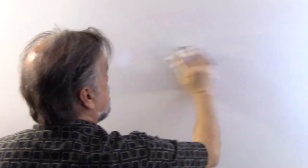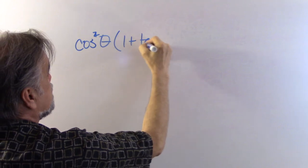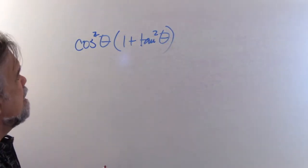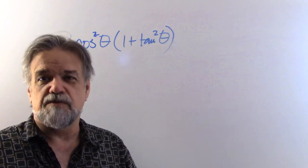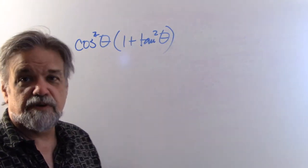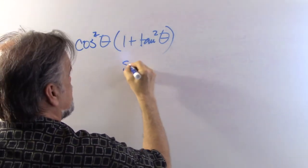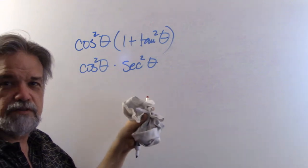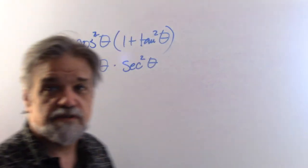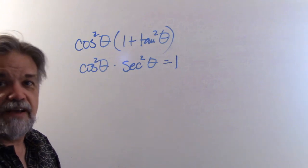Number five: cosine squared of theta times one plus tangent squared of theta. The easy approach: one plus tangent squared of theta is the Pythagorean identity for secant squared of theta. So we have cosine squared times secant squared. Since cosine and secant are reciprocals, cosine squared and secant squared are also reciprocals, and multiplying a number by its reciprocal gives one. The answer is one.